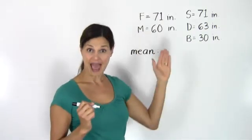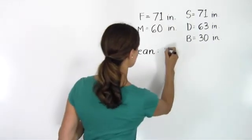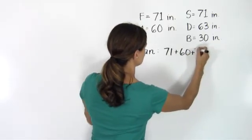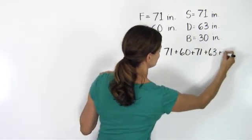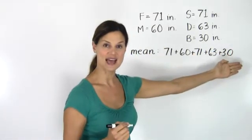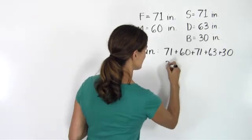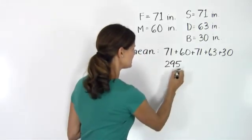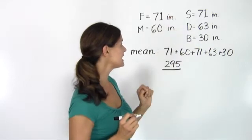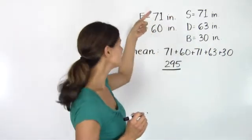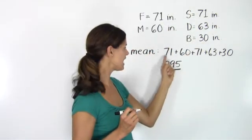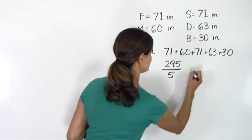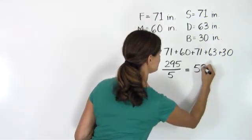Let's start by finding the mean height of this family. We add up all the heights: 71 + 60 + 71 + 63 + 30. If we add all those heights up, we get a total of 295. Then we divide by the number of items in our data set. There's a family of five, so we divide by five. 295 divided by five equals 59 inches.